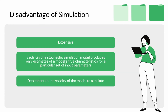There are also disadvantages to using simulation. Each run of a stochastic simulation model produces only estimates of a model's true characteristics for a particular set of input parameters. It is expensive, and it must display realistic details, requiring that hardware and software be well-paired and dependent on the validity of the model being simulated.